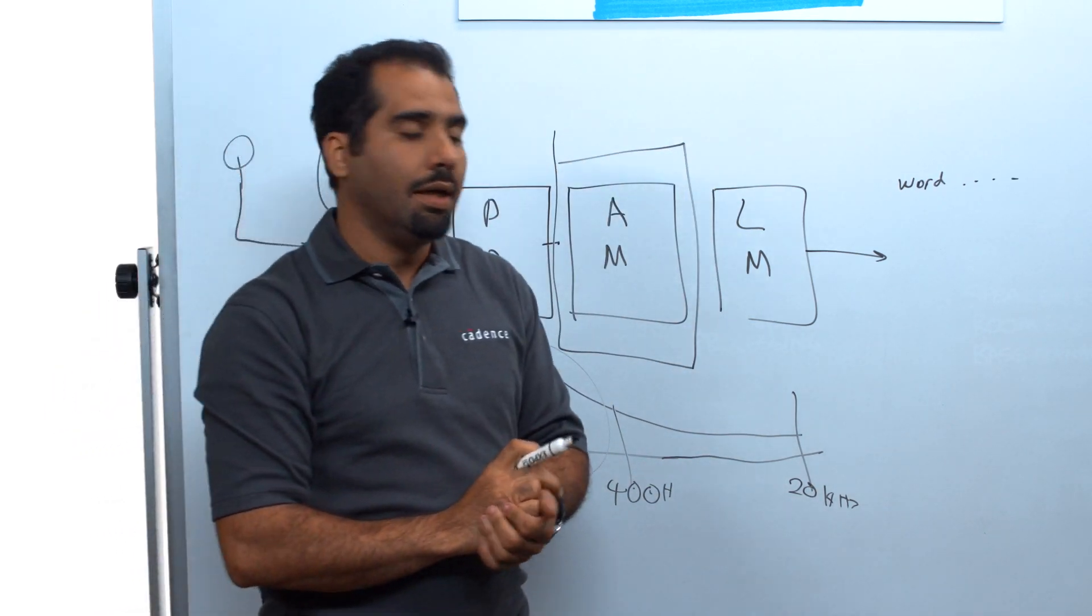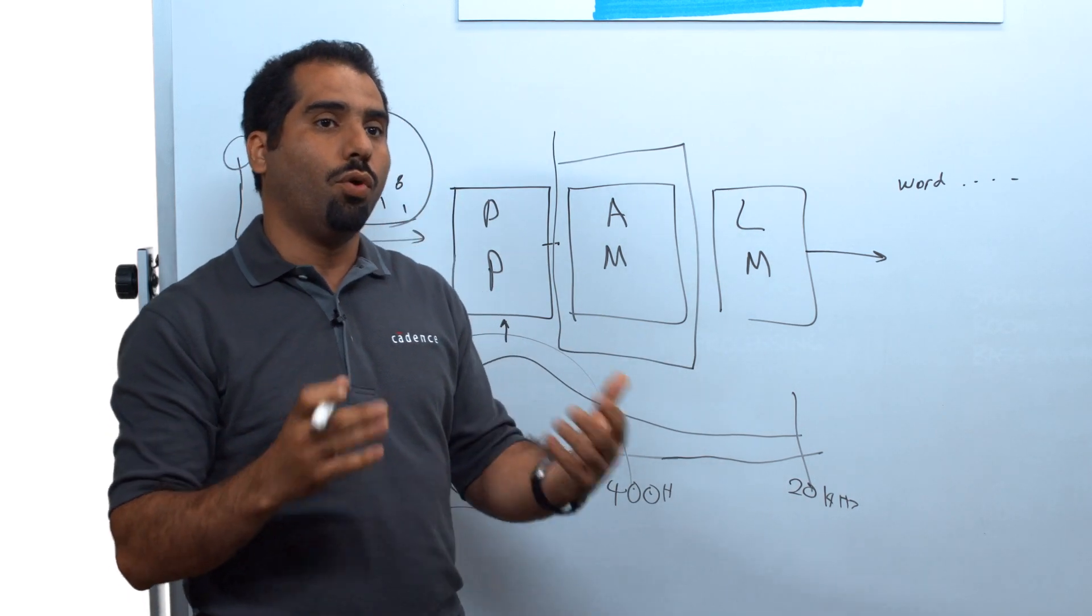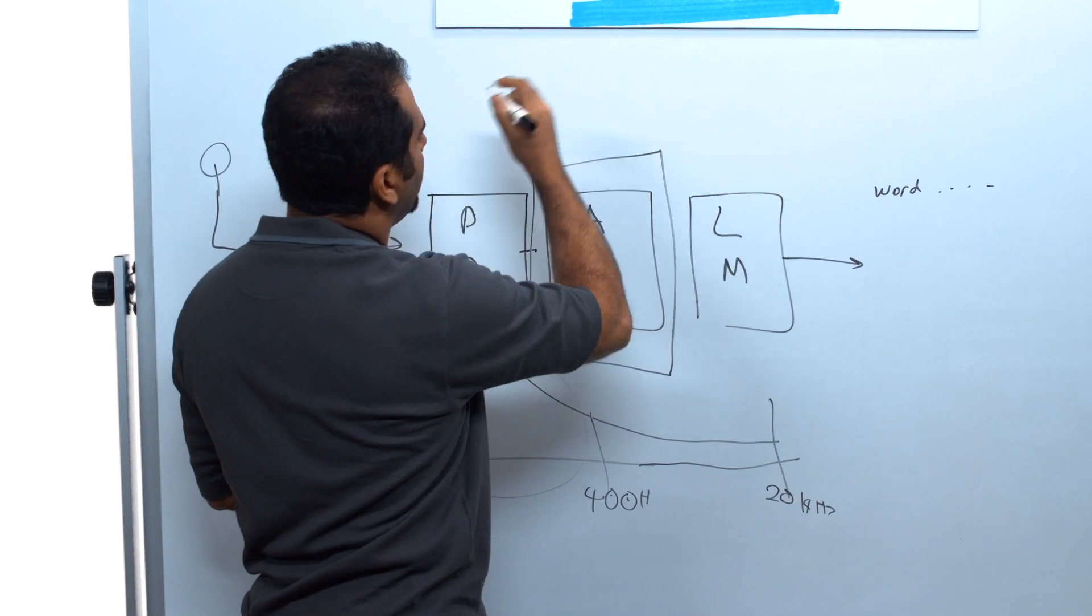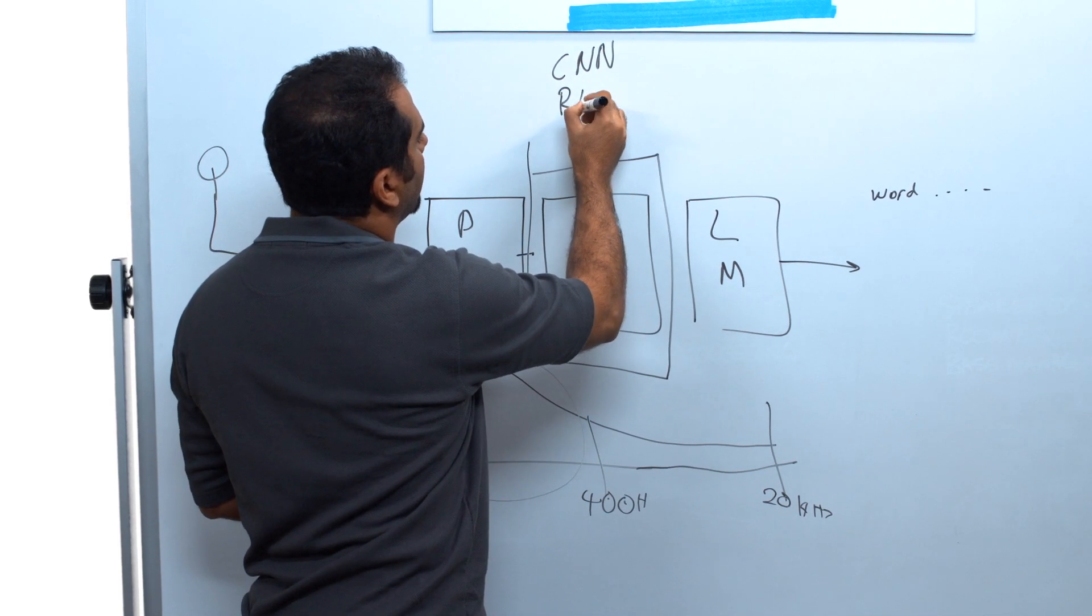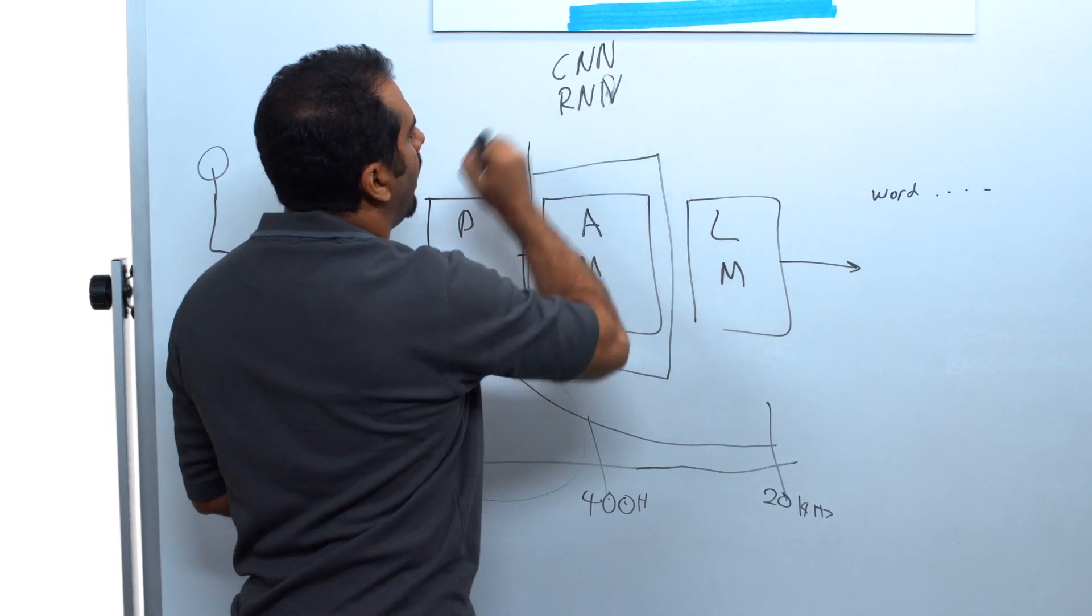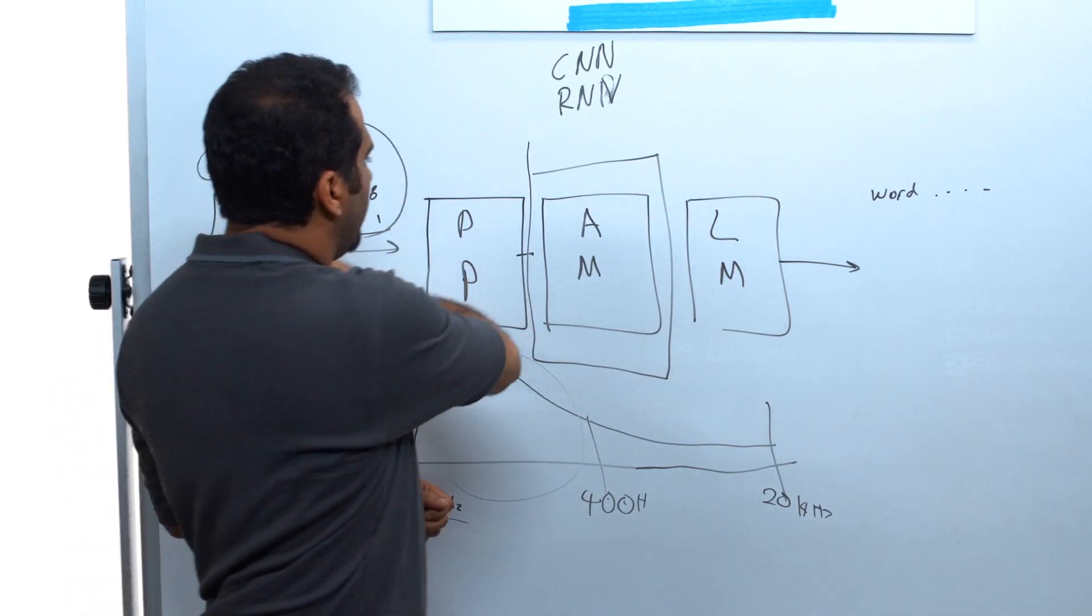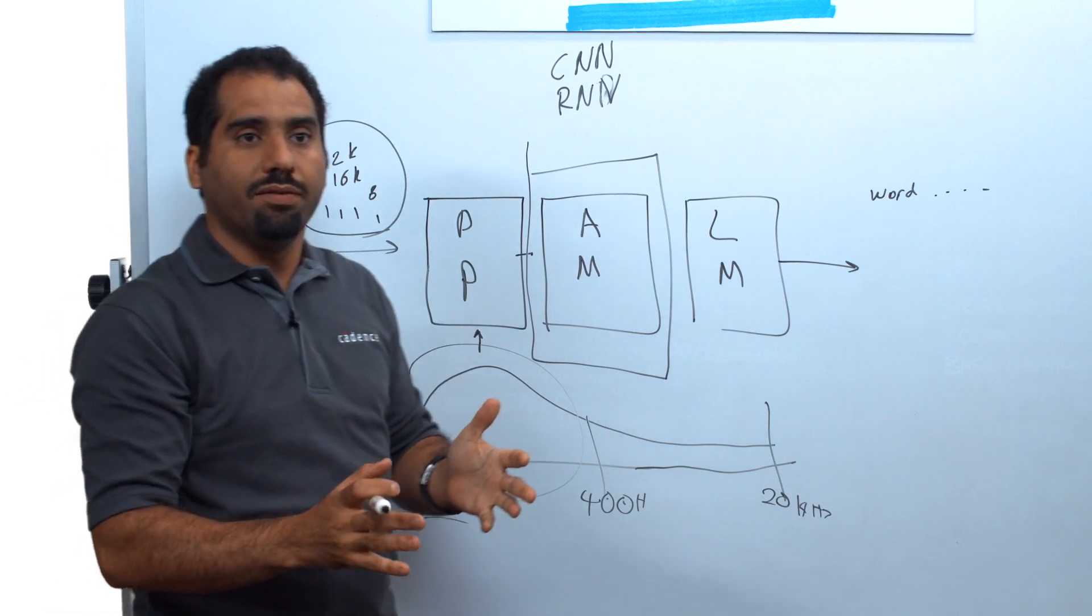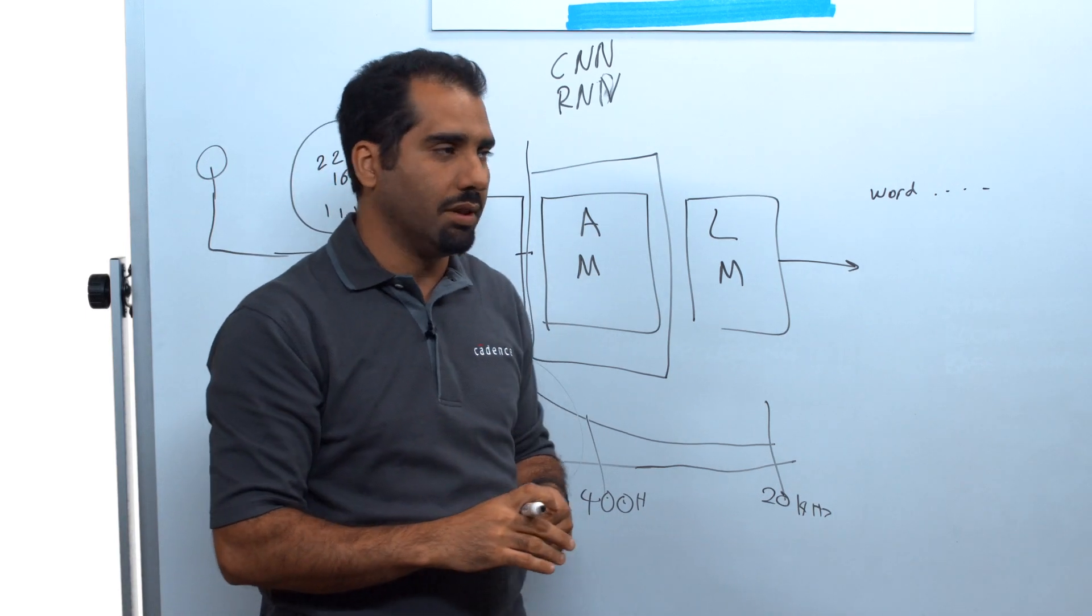Acoustic model is by far probably the block responsible for all the improvement in the past few years. Because inside this block, two new technologies have been adopted, which are CNN and RNN. And they together are responsible for most of the improvement that happened on the word error rate in the entire chain. And we're going to go in details about these two, as they have been covered in previous Cadence Whiteboard Wednesday, and will be covered in future ones as well.